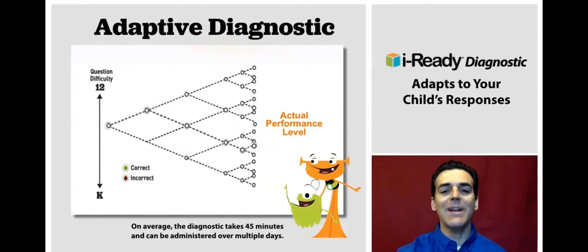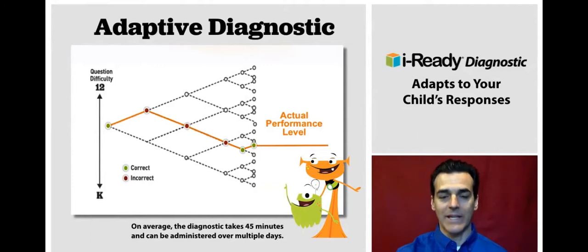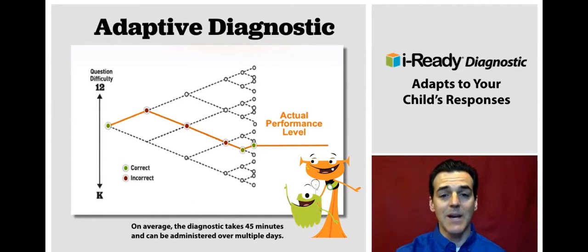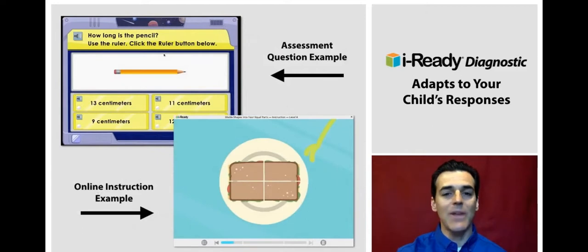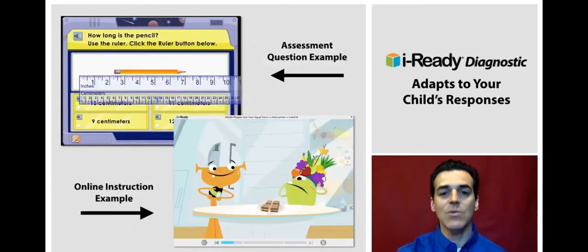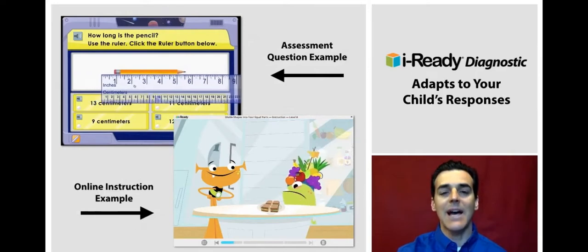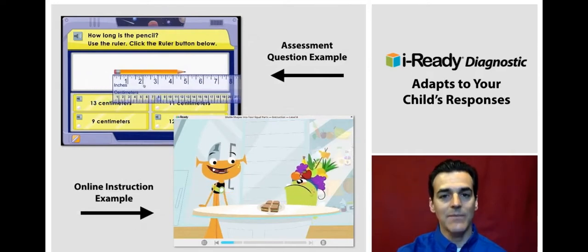Number one, the iReady online assessment is adaptive in nature. This means that students see questions based on how they're performing. If a student struggles, the questions get easier. If a student is breezing through, the questions become more challenging. Once a student completes the diagnostic, the teacher will know exactly what this student needs, so it eliminates the necessity to over-test our children, thus allowing more time for teaching.